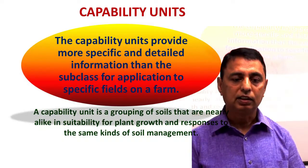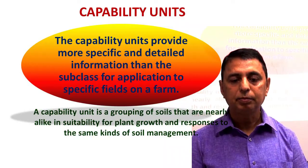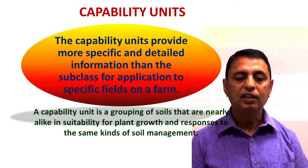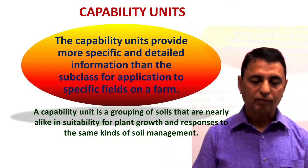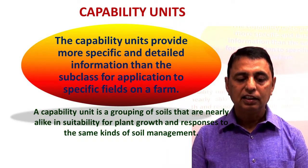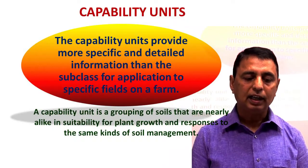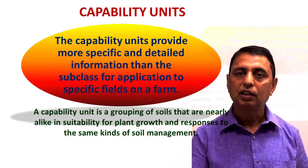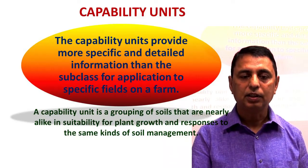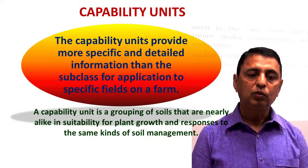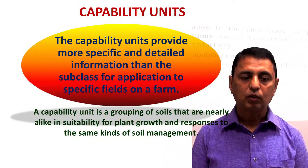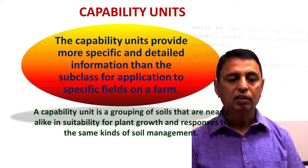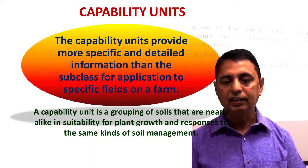Land capability units provide more specific and detailed information than the subclass for application to specific fields on a farm. A capability unit is a grouping of soils that are nearly alike in suitability for plant growth and respond to the same kinds of soil management. These units are a further classification of land capability after subclasses. Land capability units are soil groups within a subclass, and the soils in a capability unit are enough alike to be suited to the same crops and pasture plants, require similar management, and have similar productivity.